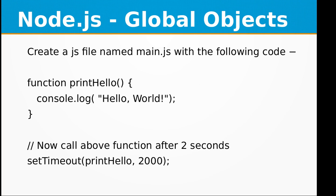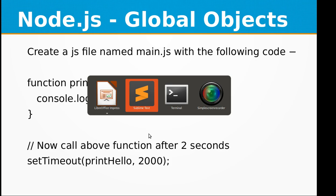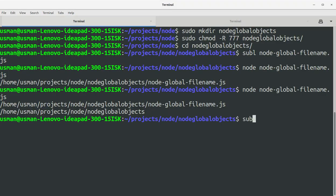Let's create a new file called 'node_global_setTimeout.js'. The code defines a function printHello that prints 'Hello World' on the console. Then we call that function after two seconds using setTimeout — passing printHello and 2000 milliseconds, which equals two seconds.